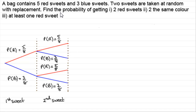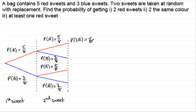Now we're going to be asked questions like: find the probability of getting two red sweets — a red sweet followed by another red sweet. What we need to do is take this probability of five eighths and multiply it by the next probability along the branch. The probability of taking two reds, often written P(2R) or P(R,R), is five eighths times five eighths, which gives us a total of 25 over 64.